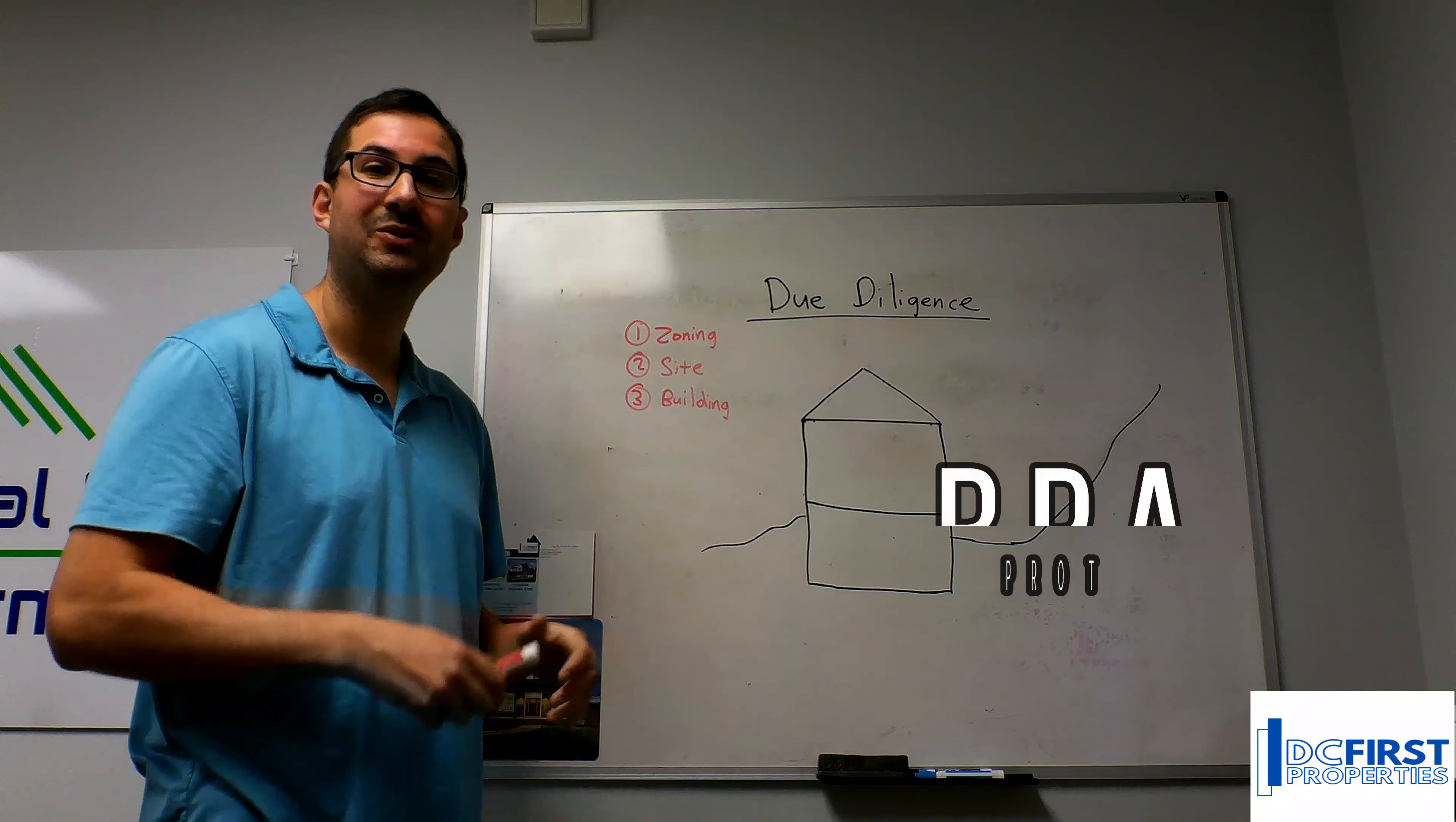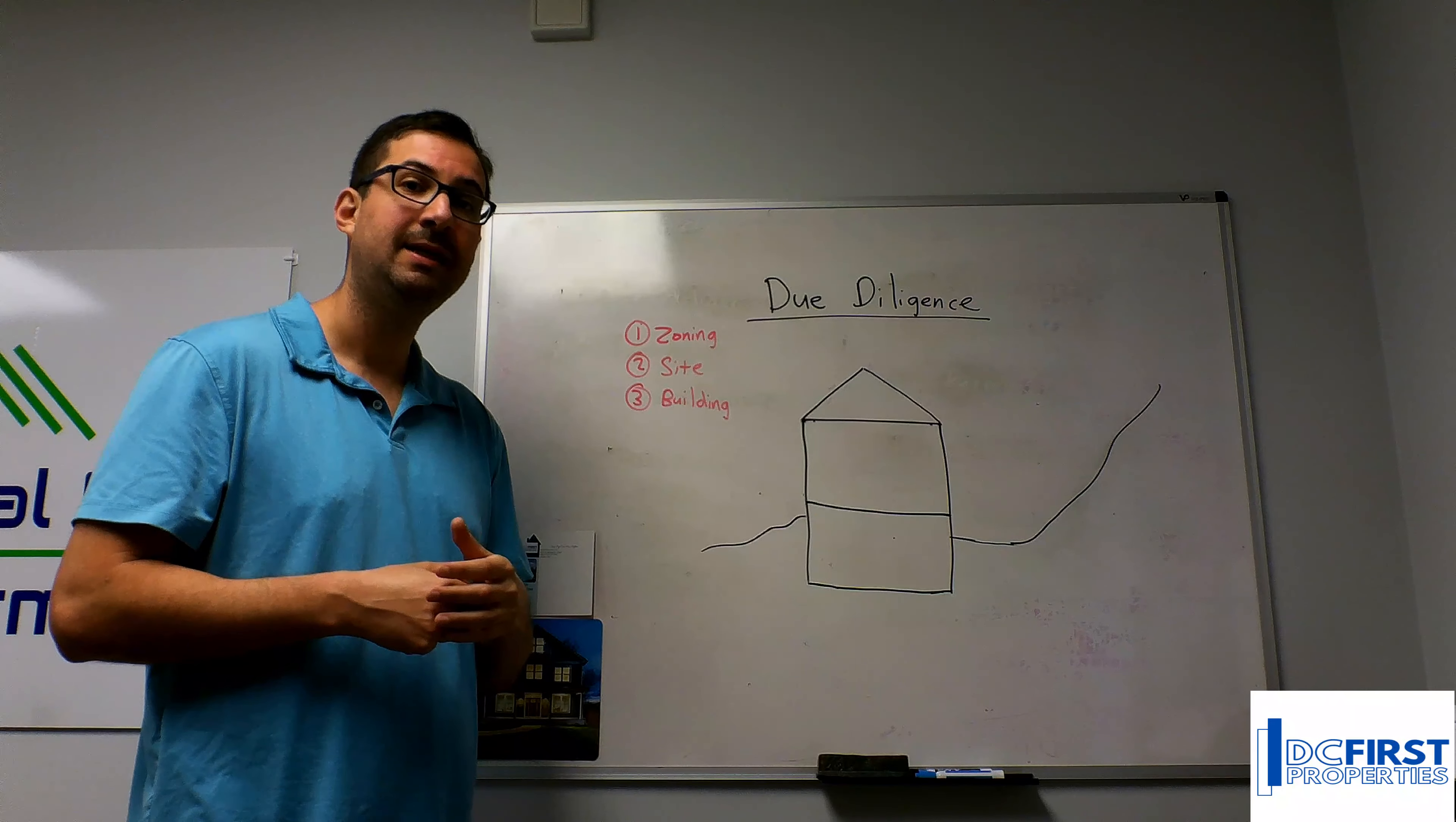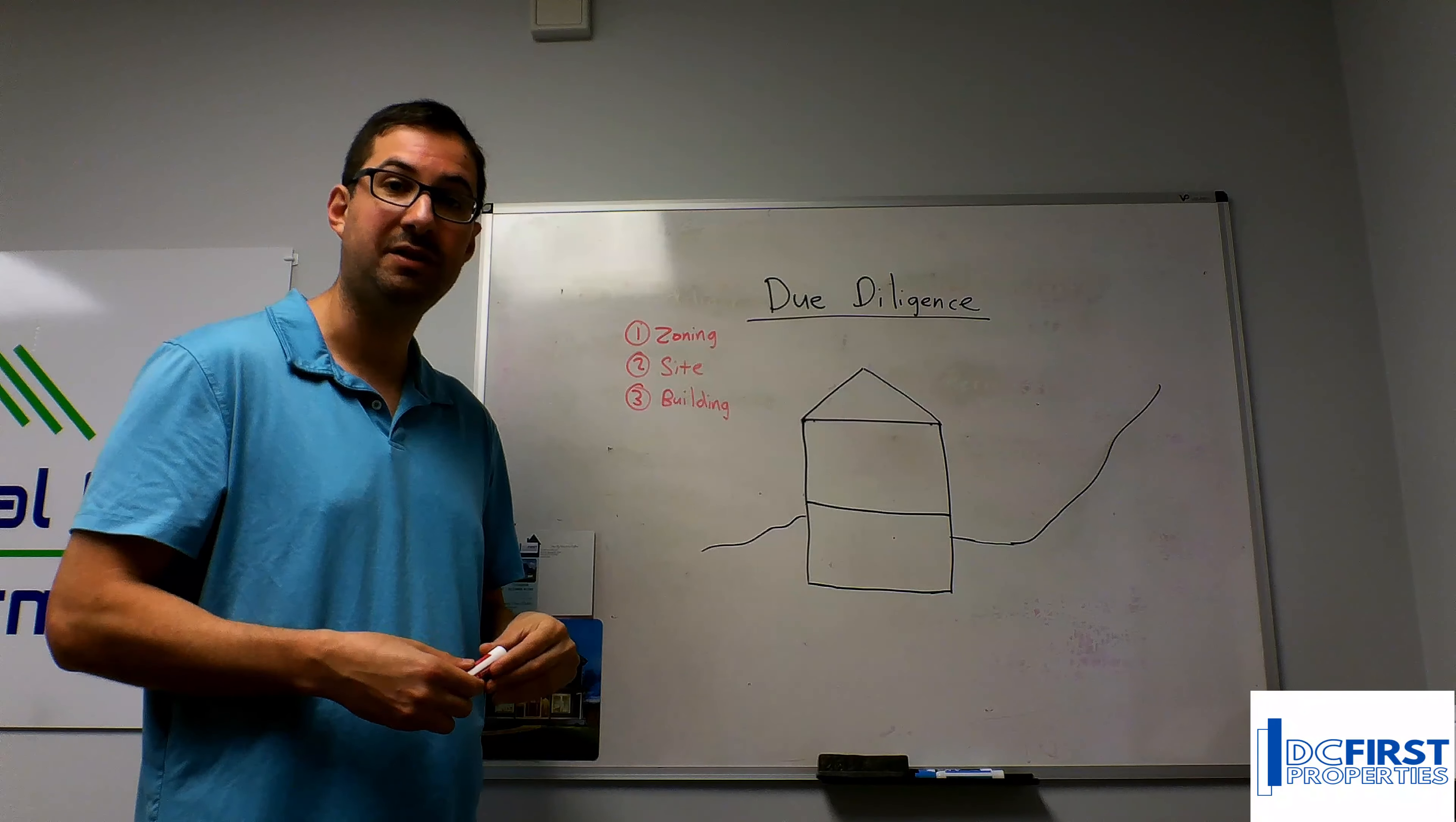The other last piece of site is something called RPA - residential protected areas. Many jurisdictions have these. Site can indicate whether or not you have very limited building uses on that property.